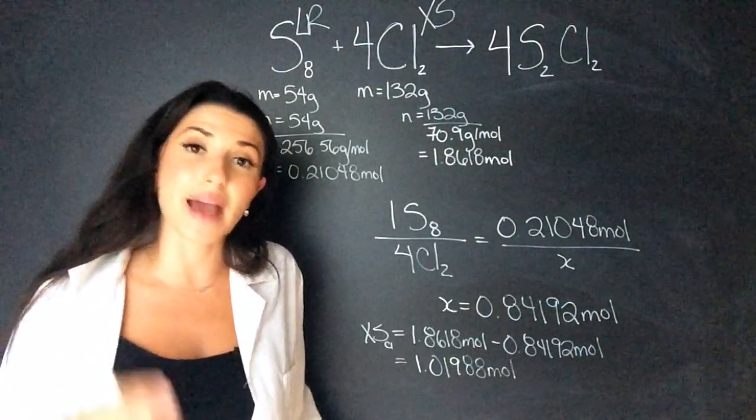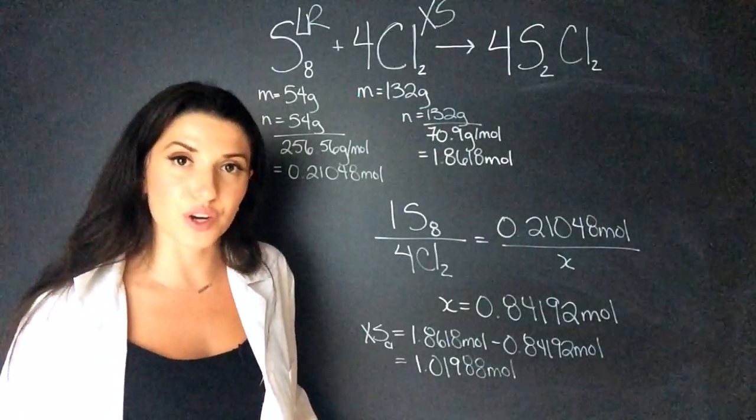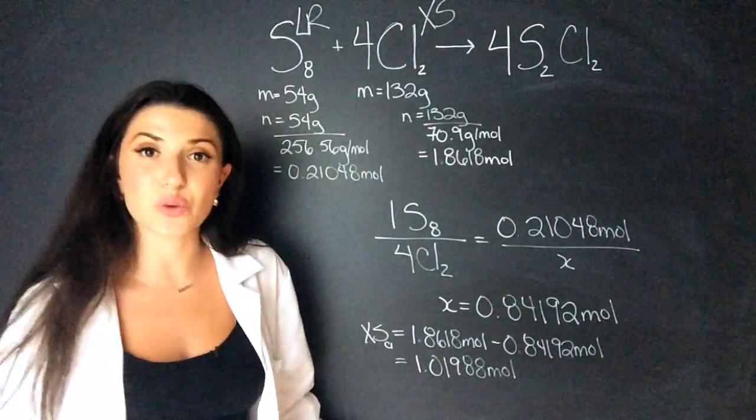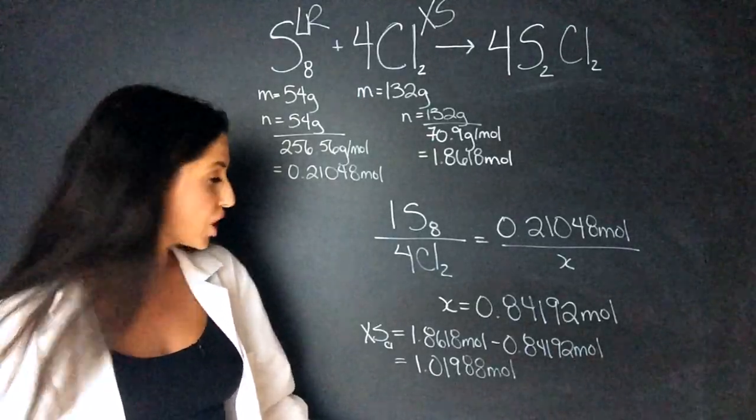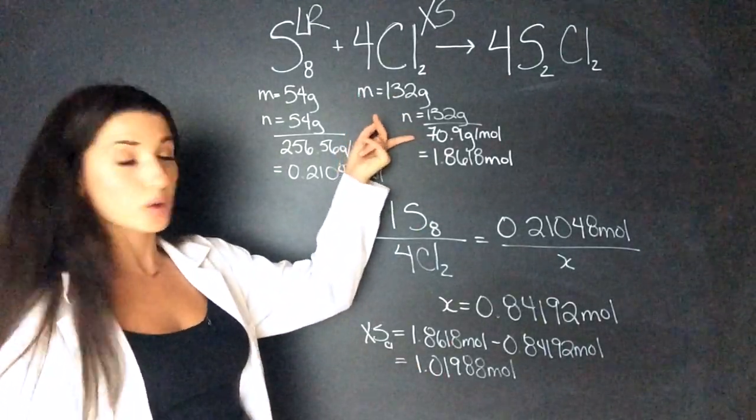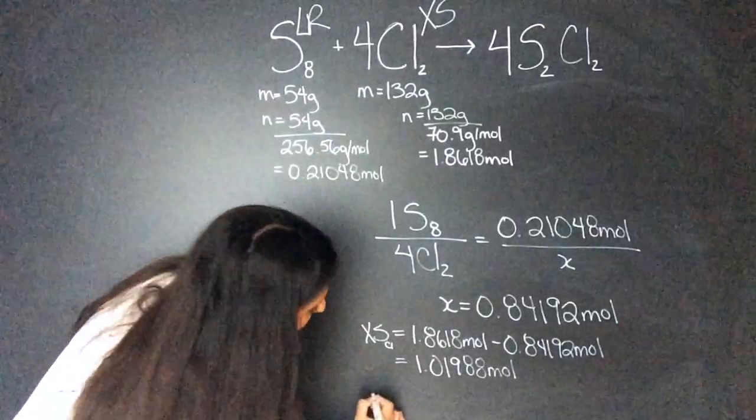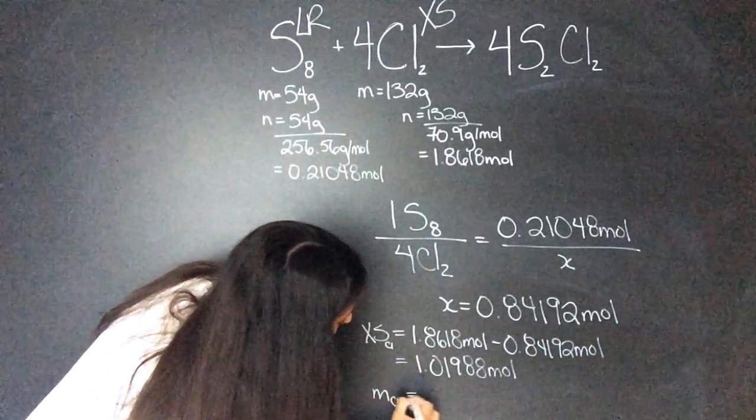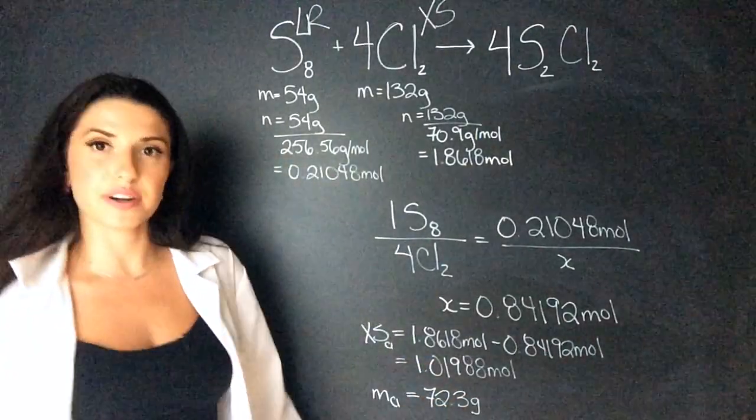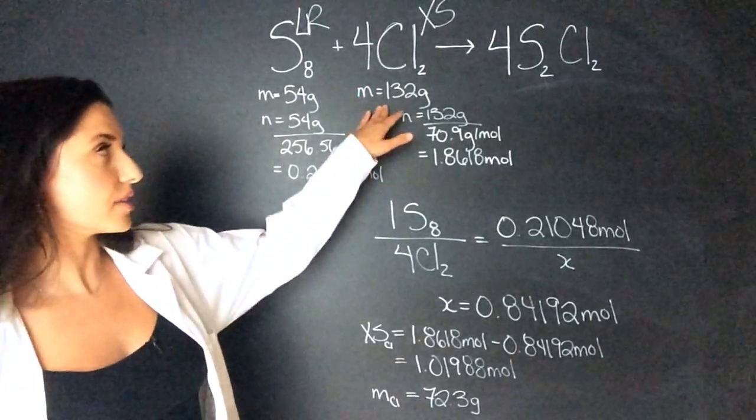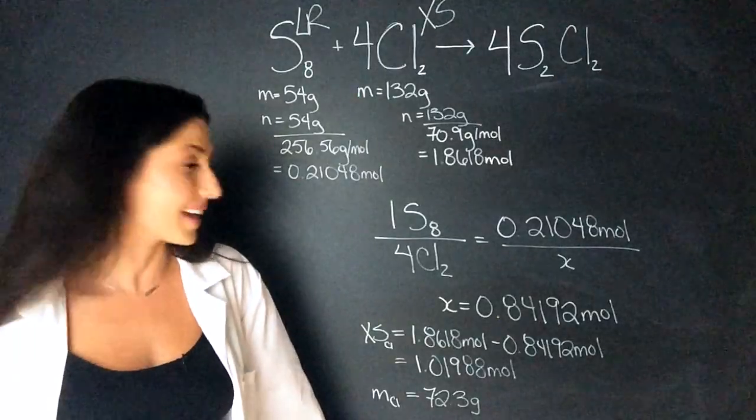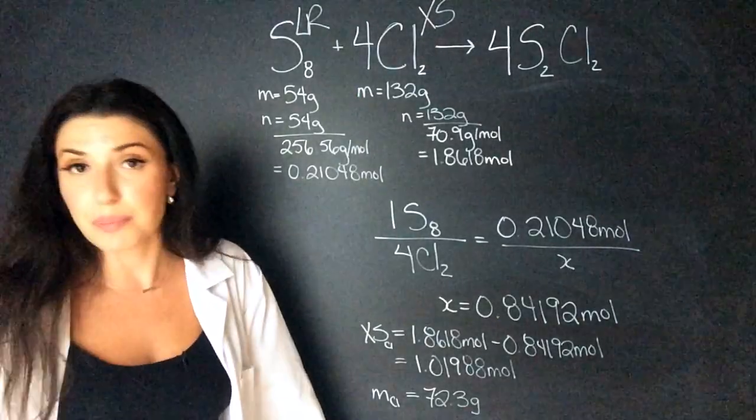Now the question asked for what mass is going to be left over. So I'm going to use my moles and molar mass equation. So I know that mass is equal to moles times molar mass. So when I multiply these moles times the molar mass of chlorine, which I've already calculated, I get the mass of chlorine to be 72.3 grams left over. So I started with 132 grams, 72.3 will be left over. And then I could also calculate how much is used up if I had to.